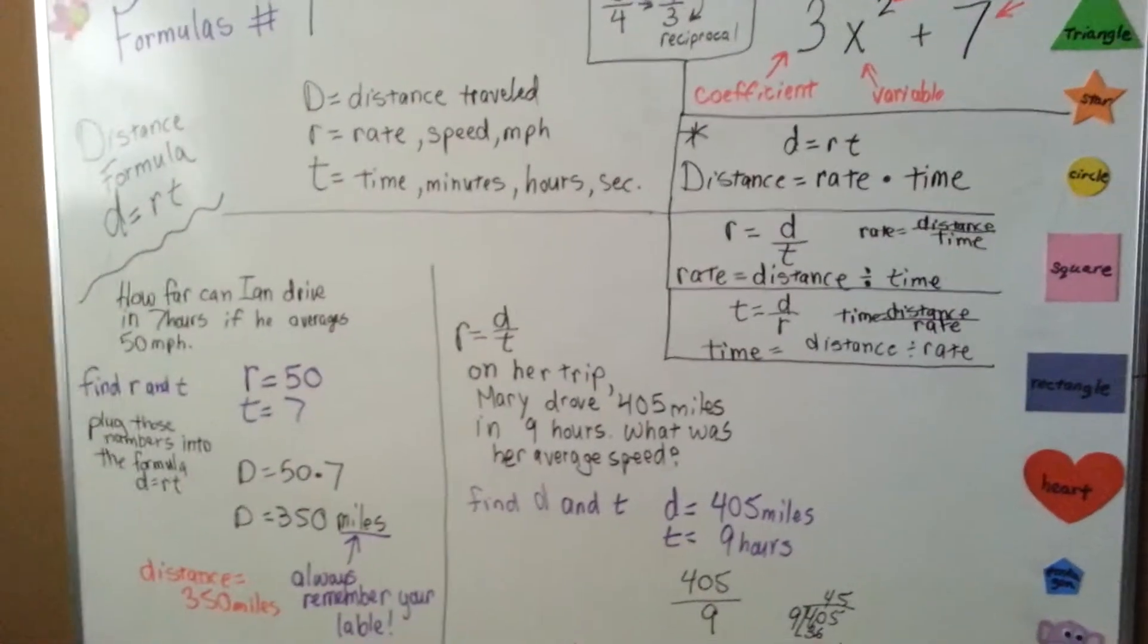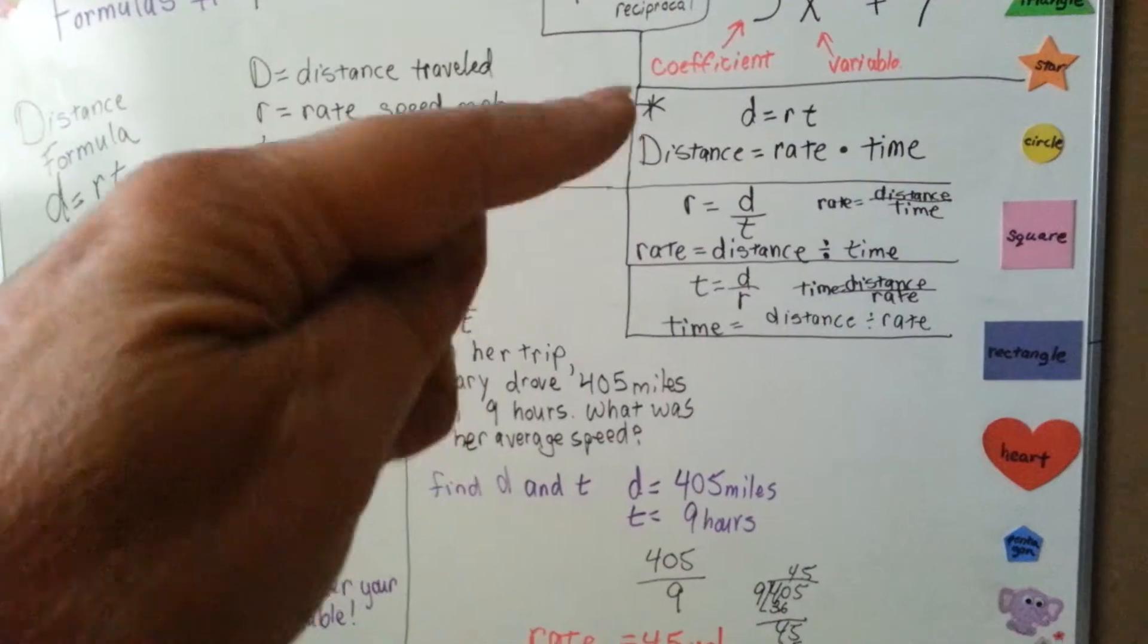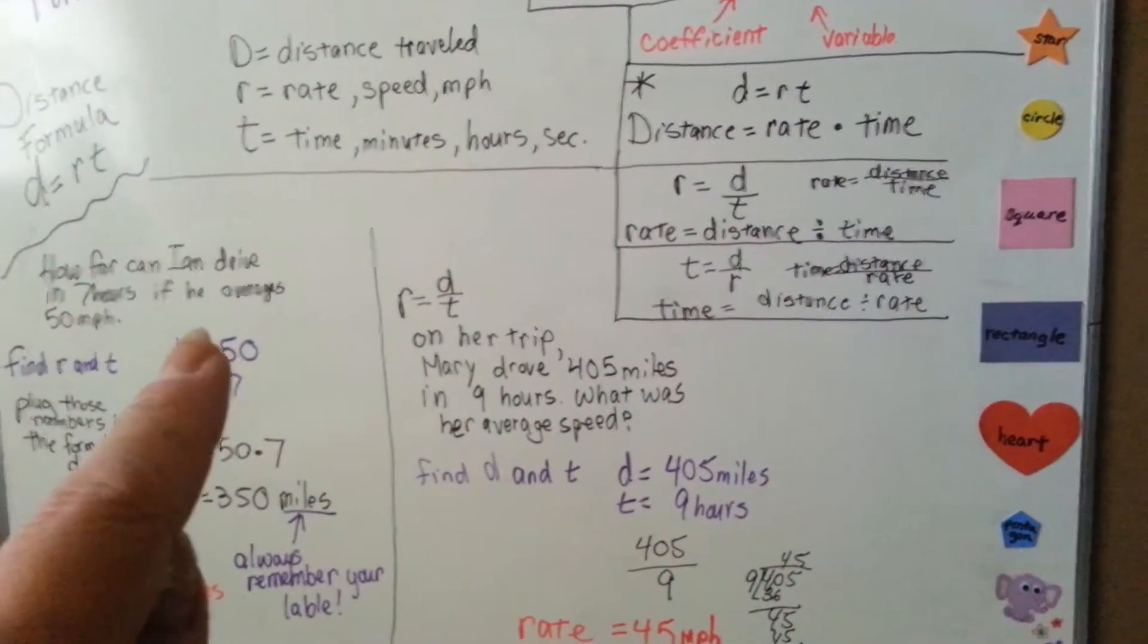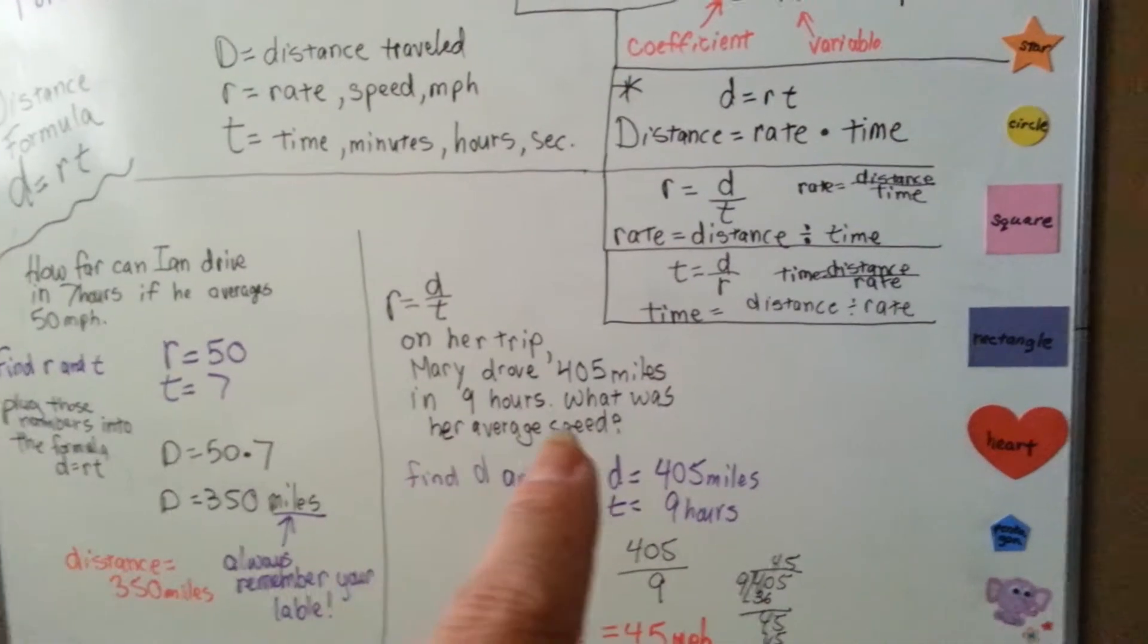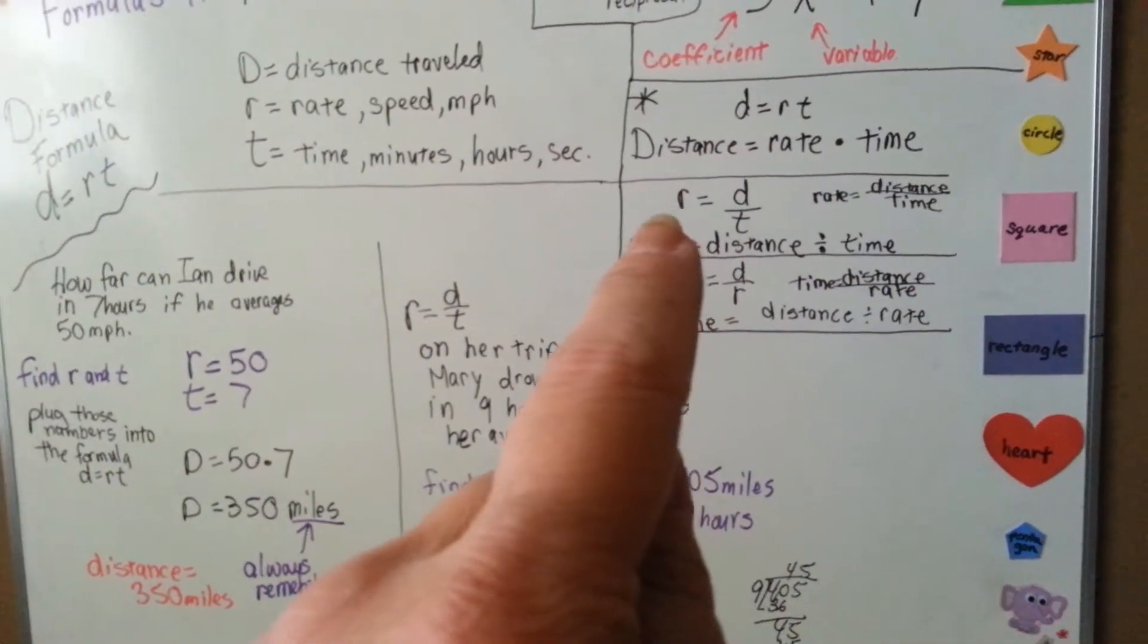Probably the hardest part about the distance formula is knowing which of these three you need to use. The easiest way is to look at the question. What was her average speed? So that's telling you rate. So you need to use this formula.